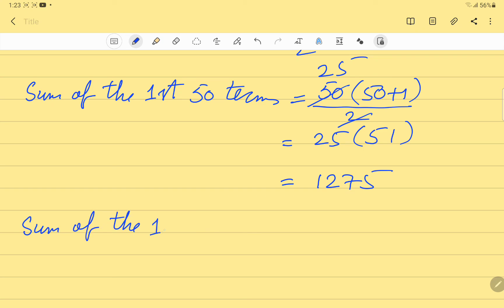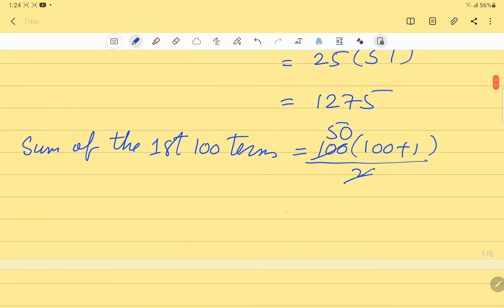the first 100 terms. We will write 100(100+1)/2. The 2 cancels with 100, giving 50 times 101, which equals